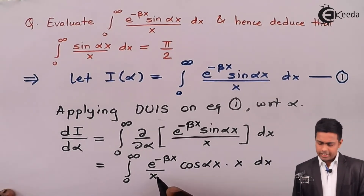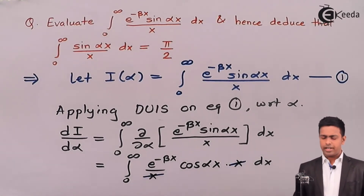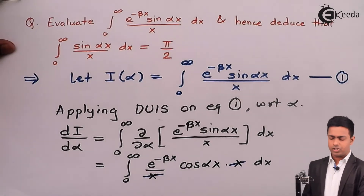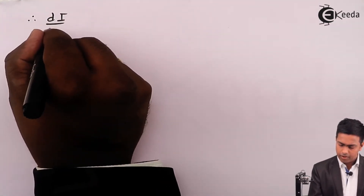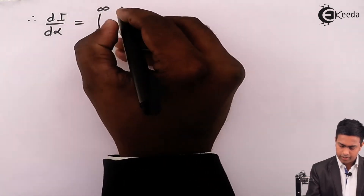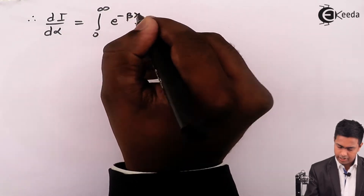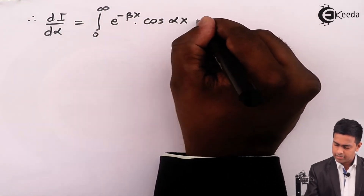We can cancel x in the numerator and denominator. Therefore, dI by d alpha equals integration from 0 to infinity of e raised to minus beta x times cos(alpha x) dx.